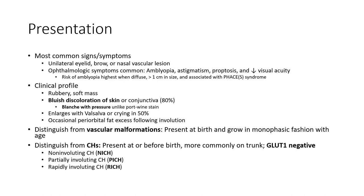It stems from vascular tumor formation, present at birth, and grows in a monophasic fashion with age. Distinguished from congenital hemangioma subtypes — present at birth, GLUT-1 negative — including non-involuting, partially involuting, and rapidly involuting congenital hemangioma subtypes.